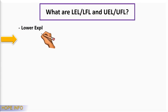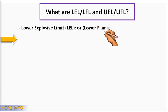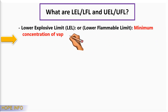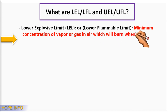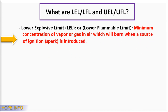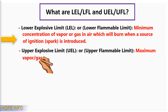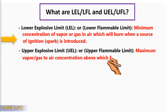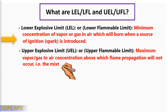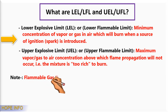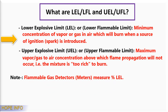What are the LEL, LFL, UEL, and UFL? Lower explosive limit (LEL) or lower flammable limit (LFL): the minimum concentration of vapor or gas in air which will burn when a source of ignition is introduced. Upper explosive limit (UEL) or upper flammable limit (UFL): the maximum vapor or gas to air concentration above which flammable propagation will not occur — the mixture is too rich to burn. Note: flammable gas detector meters measure the percentage of LEL.